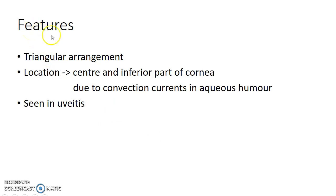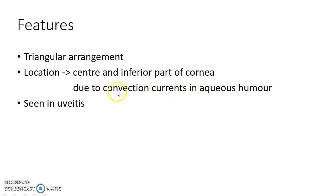Keratic precipitates are arranged in a triangular pattern. They are located at the center and inferior part of the back of the cornea. This is due to convection currents in the aqueous humor. Keratic precipitates are seen in uveitis.